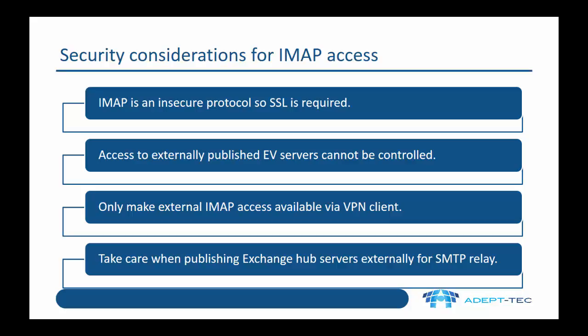One way of addressing that is to only make external IMAP access available via a VPN client. By making it available via VPN, it's effectively still internal access, so a user from their personal mobile or tablet wouldn't be able to configure a profile. Finally, it's very important to take care when publishing Exchange hub servers externally for SMTP relay, that you don't inadvertently allow unauthenticated users to relay through your Exchange hub servers.